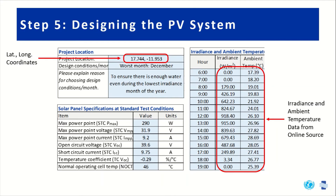Once you have your latitude and longitude coordinates, you'll download the irradiance and ambient temperature data for the specific worst month — meaning the lowest average irradiance month of the year — to ensure that you can produce water even during the worst conditions. You can then enter that information into the solar-powered water system design tool.